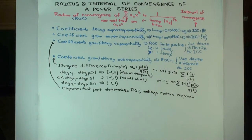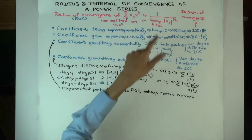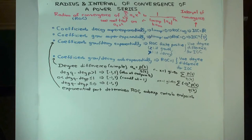In this talk we'll consider one of the cases of determining the radius and interval of convergence of a power series summation a_k x^k. We are considering the case where the coefficients are growing or decaying exponentially, but not necessarily a pure exponential — it could be something like exponential times sub-exponential.